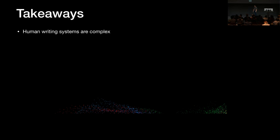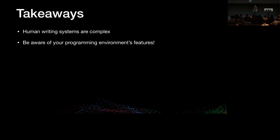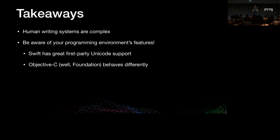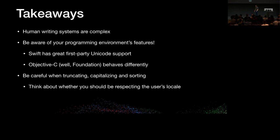The takeaways: human writing systems are complex because humans are complex. We're trying to enable people around the world with different cultures and writing systems to use our software appropriately. You should be aware of your programming environment's features — by standing on the shoulders of those who did the work before us, we don't have to interact directly with a lot of this complexity. Swift has great first-party Unicode support and uses the ICU library under the hood. The Java variant of ICU ships as part of the Android API, but Java's string APIs don't use it by default. Objective-C/Foundation behaves differently to Swift. Be careful when truncating, capitalizing, and sorting strings — think about whether you should be respecting the user's locale. Use UTF-8 everywhere as an interchange format.